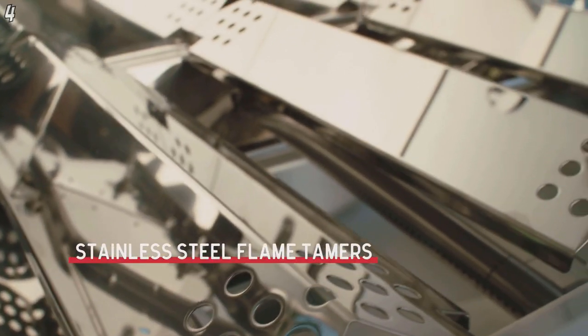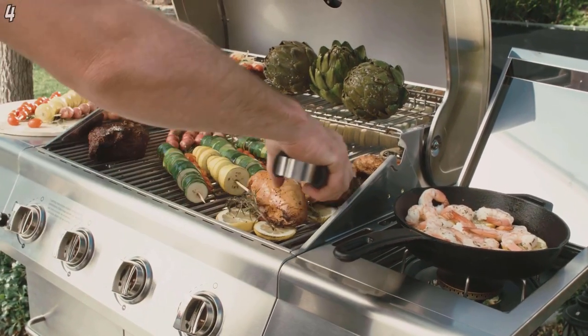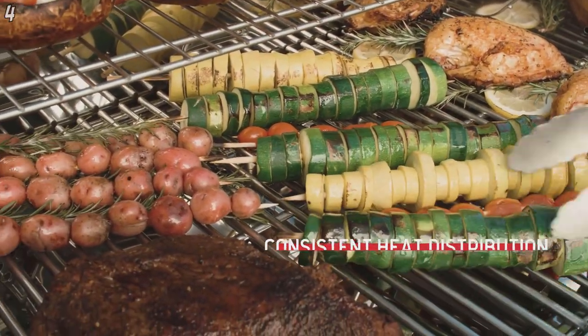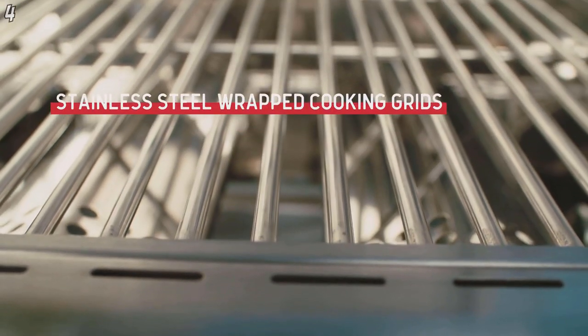While angled flame tamers deflect heat, prevent flare-ups and convert drippings to smoky flavor. Beneath the cooking surface, a consistent cooking power system ensures uniform heat throughout the firebox for superb results.